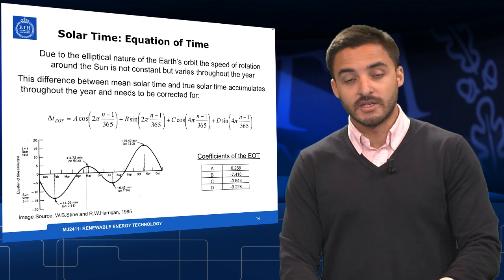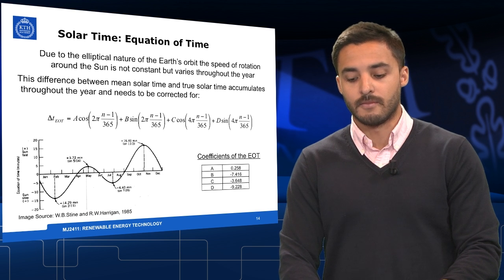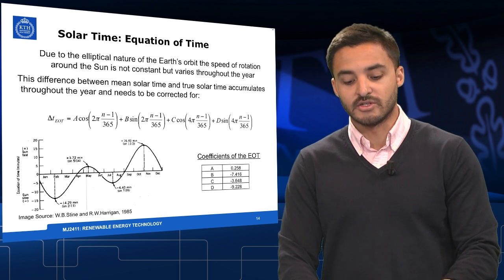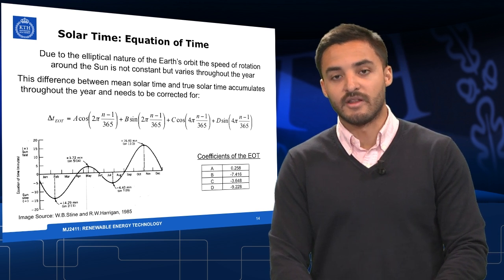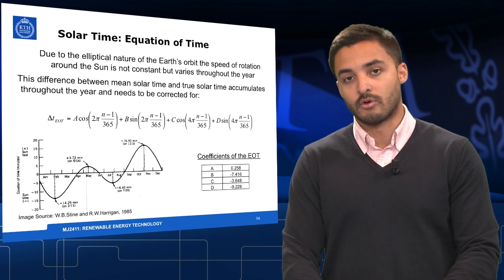The correction of the equation of time is basically due to the elliptical nature of the Earth's orbit. The speed of rotation around the sun is not constant but varies throughout the year.